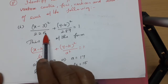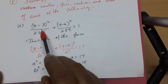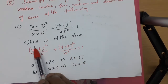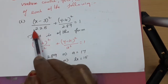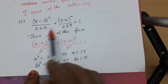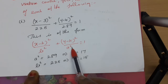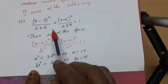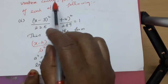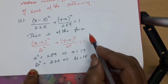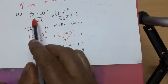The equation is: (x minus 3) squared by 225 plus (y minus 4) squared by 289 equal to 1. This is of the form x minus h whole square by b square plus y minus k whole square by a square equal to 1, because the denominator of the x value is smaller compared with the denominator of the y value. So this conic is an ellipse.